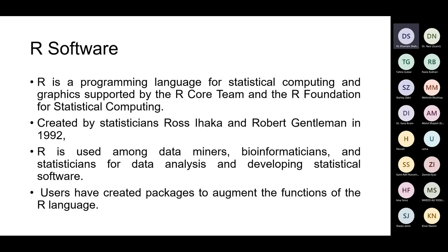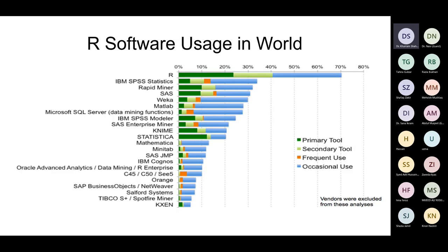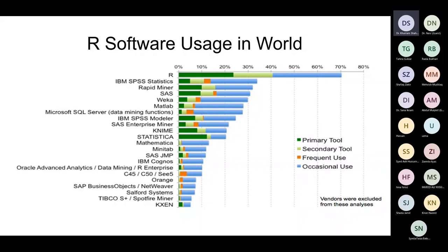R is a statistical program where we can understand our data, perform statistical analysis, and create graphics. As for the importance of R, it is ranked among the top 21 softwares currently used as a primary tool. In the ranking of 20 softwares, R is in the top position. R is the future of data analysis — if you know R, you can deal with your data more easily, understand your data, and present it in the most effective ways.